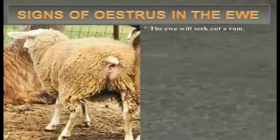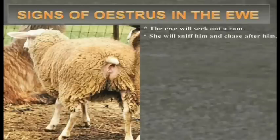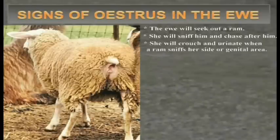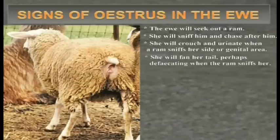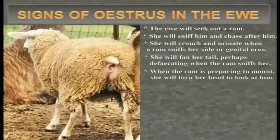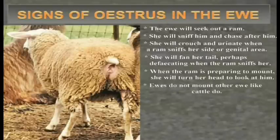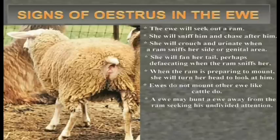Signs of estrus in the ewe: the ewe will seek out a ram, sniff him, and chase after him. She will crouch and urinate when a ram sniffs her side or genital area, and she will fan her tail, perhaps defecating when the ram sniffs her. When the ram is preparing to mount, she will turn her head to look at him. Ewes do not mount other ewes like cattle do; a ewe may run away from the ram seeking his undivided attention.